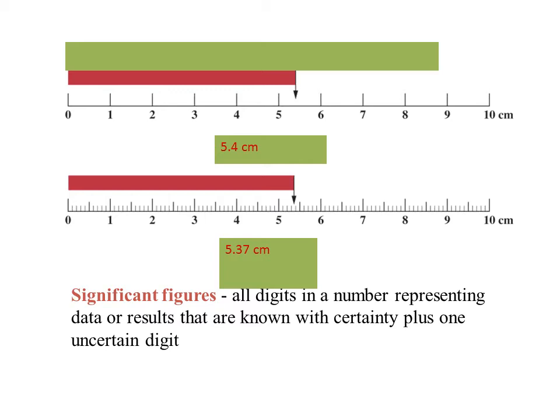These are what are called significant digits, which are all the digits in a number that are measured and known with certainty, plus one uncertain digit.